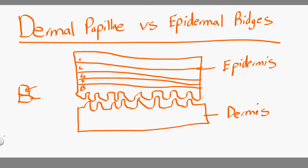And these little waves in the epidermis are called the epidermal ridges. The egg crate of the epidermis are called epidermal ridges.